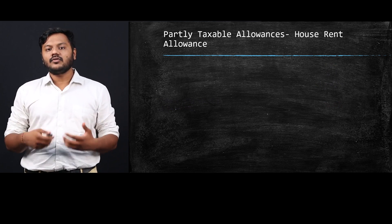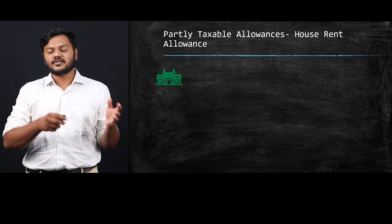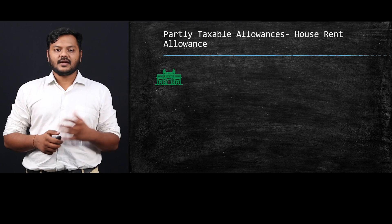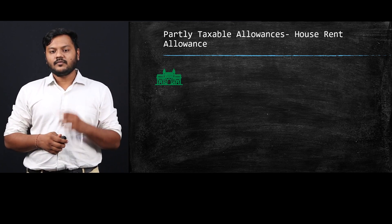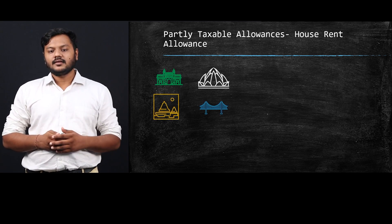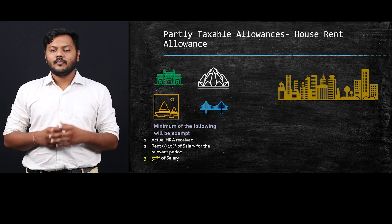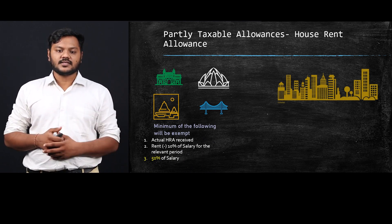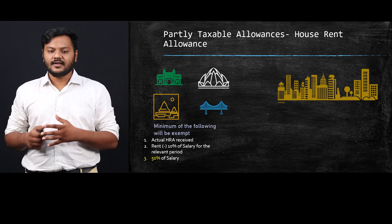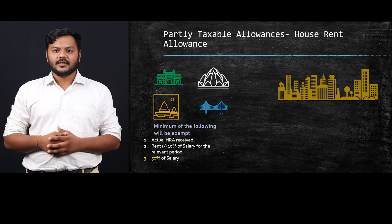Next is House Rent Allowance (HRA). The company provides a rent amount to help employees stay in a particular city, especially if they have relocated. HRA is bifurcated into two parts. If you are living in a metro city — which covers Mumbai, Delhi, Chennai, and Kolkata — the exemption is the lowest of: actual HRA received, rent paid to landlord minus 10% of salary, or 50% of salary.